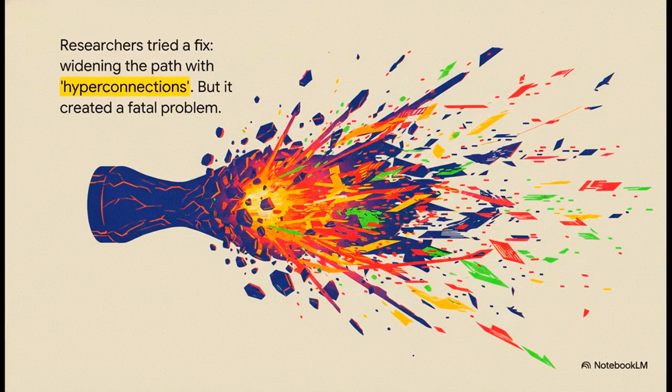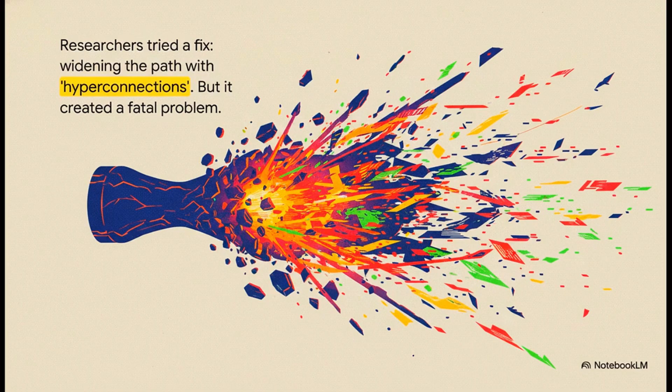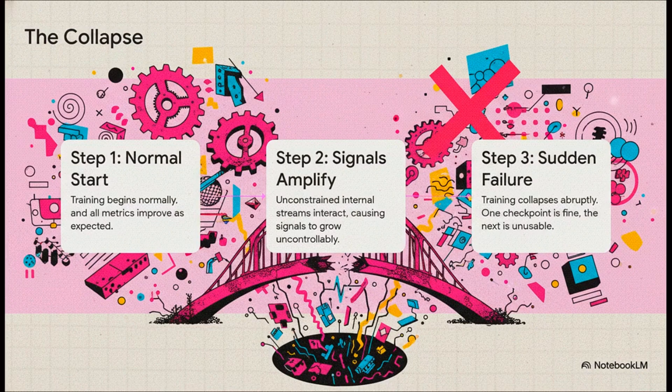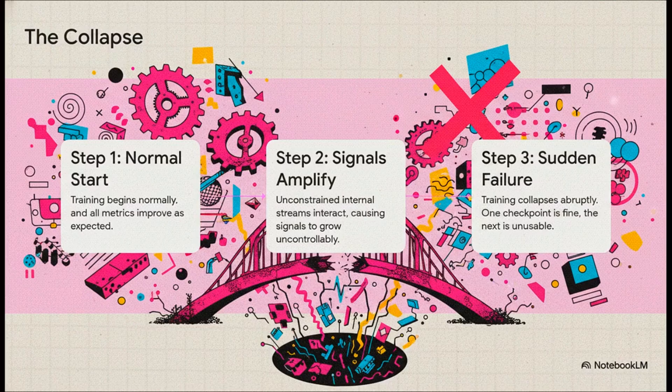So researchers tried a pretty obvious fix. Just make that path wider using something called hyperconnections. This new path was much more flexible, but it came with a massive, fatal flaw. The signals would just spiral out of control and boom, the entire training process would just collapse.